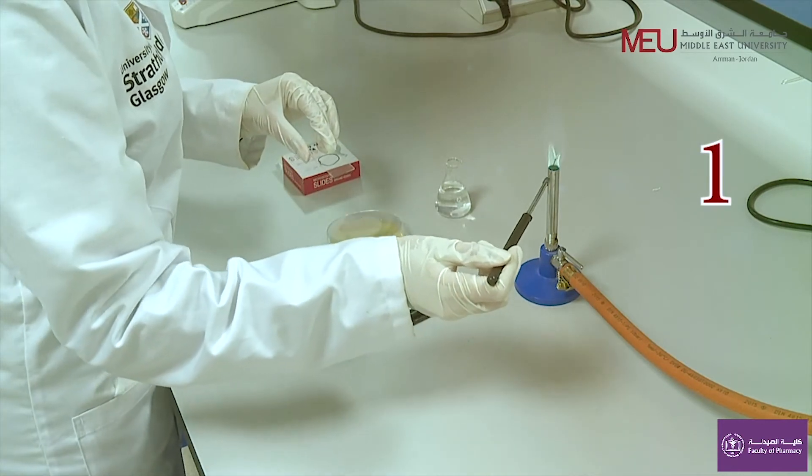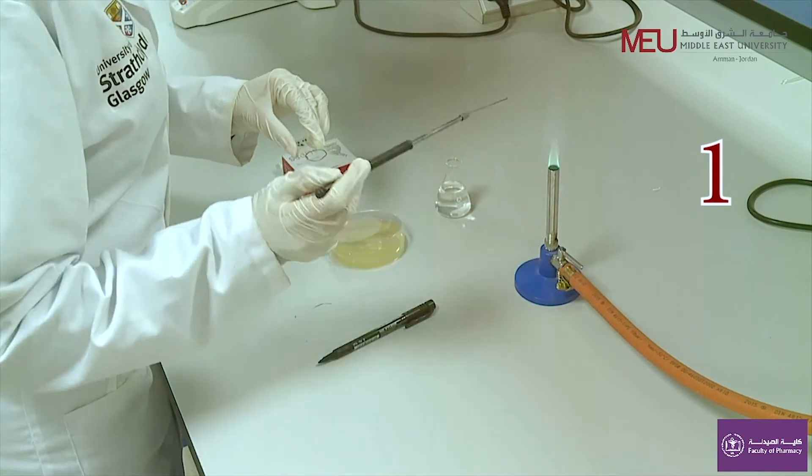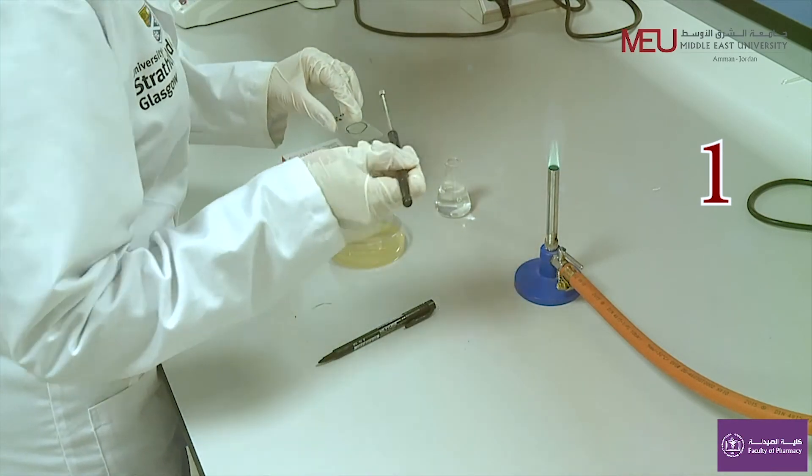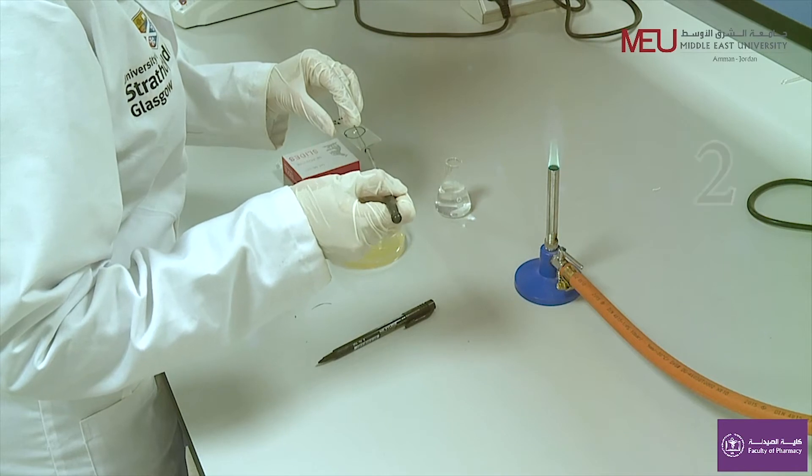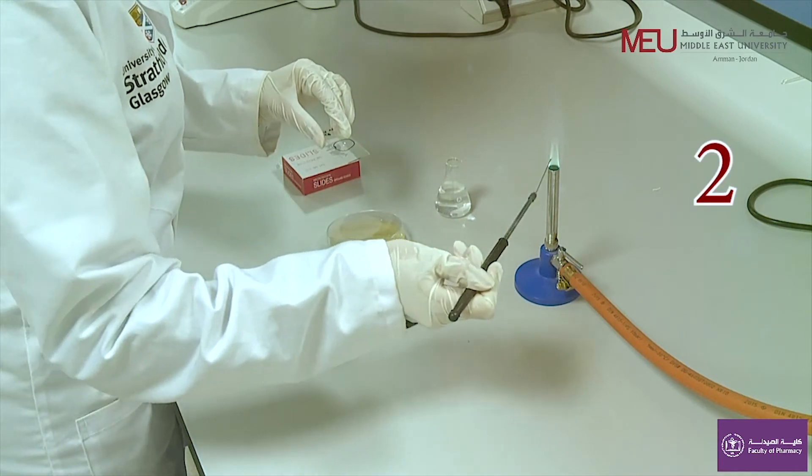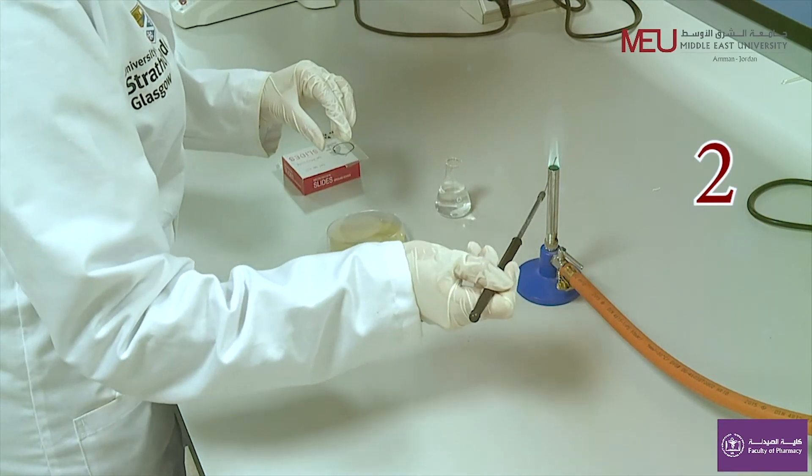Sterilize the loop and place a small drop of water on the slide. Then sterilize it again and scrape and transfer a loop of bacterial culture to the drop of water.